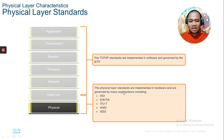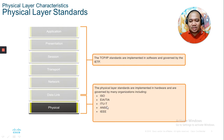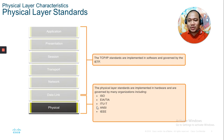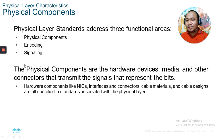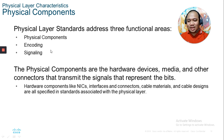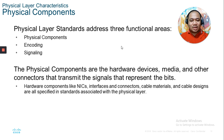Physical layer standards are implemented in hardware and governed by many organizations including the ISO, EIA, TIA, ITU-T, ANSI, and IEEE. The physical layer standards address three function areas: physical components, encoding, and signaling. Physical components are hardware devices, media, and connectors that transmit signals representing bits — such as network interface cards, interfaces, connectors, cable materials, and cable design.